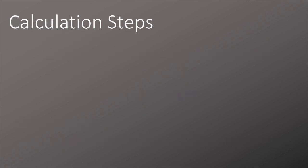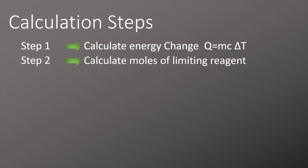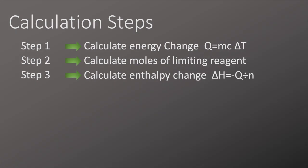So there are three steps to make sure you get the calculations right. The first step is to calculate the energy change using Q equals mc delta T. Remember the mass is the mass of the surroundings in grams, so in our case it was the mass of the liquid present in the copper sulfate. C is 4.18, that's the specific heat capacity of water, and delta T is the temperature change. In our second step we need to calculate the moles of the limiting reagent. And in our final step we need to calculate the enthalpy change using minus Q divided by n.